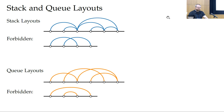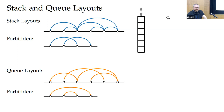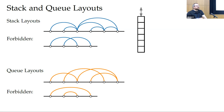Stack layouts are more popular now as book embeddings, but the name comes from the data structure stack, because this encodes the way we can add and remove items from a data structure. Imagine every edge as a data point and every vertex as a time spot. At every point in time, we can add something to the stack and remove something. An outgoing edge going to the right means we push the item; an incoming edge means we pull it.